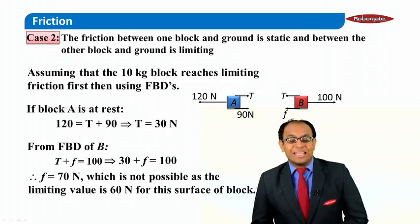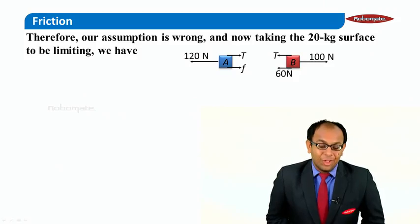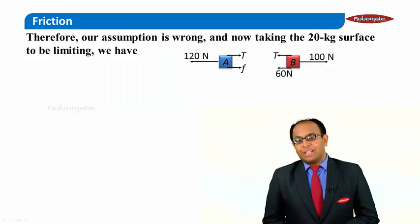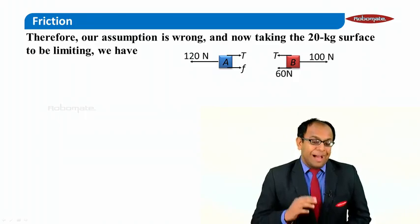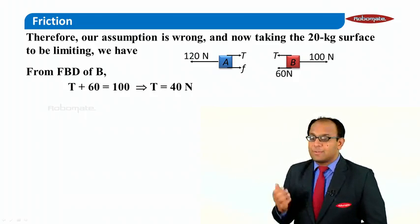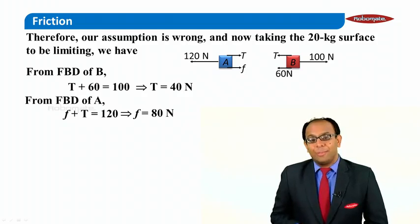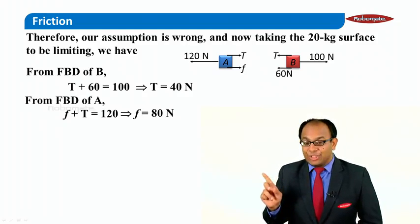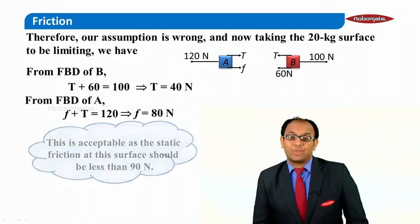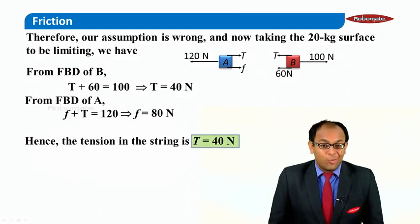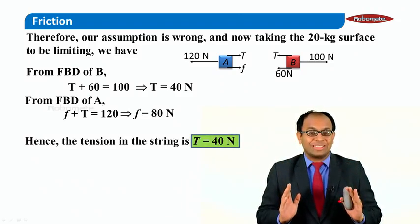The only remaining possibility is that B attains its limiting friction first. Friction on B is 60N, so the balance is taken care of by tension, giving tension equals 40 Newtons. Taking the same tension on A, friction on A becomes 80N. Since 80N is less than the limiting friction of 90N on A, this case is valid. Therefore, the tension between the two blocks is 40 Newtons.